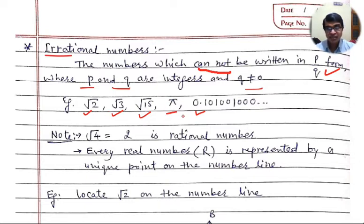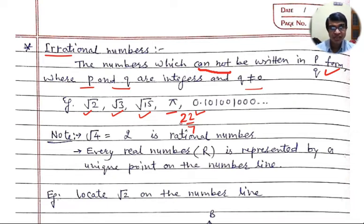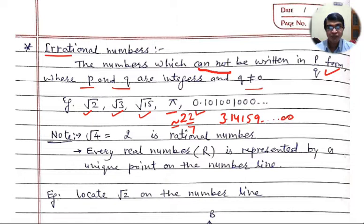Pi is also an irrational number. When we take the value of pi as 22 by 7, that is only its approximate value. So if someone asks whether 22 by 7 is rational or irrational, it is rational because we can write it in P by Q form. But pi's actual value is 3.14159 and so on, up to infinite. There are infinite digits after the decimal in the value of pi. So pi is irrational — it is neither terminating nor non-recurring, that is why pi is an irrational number.